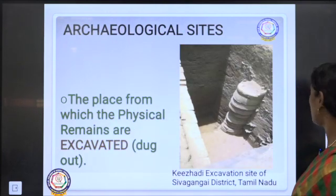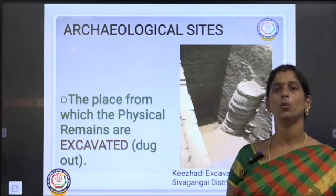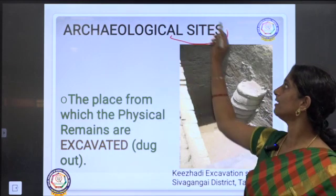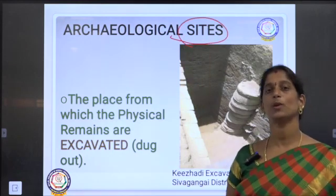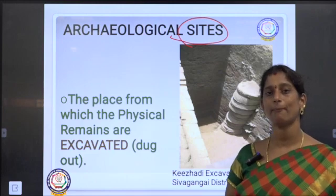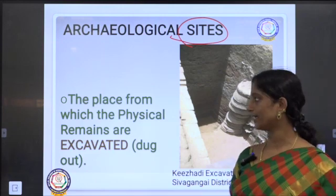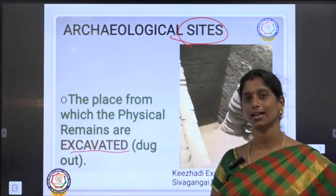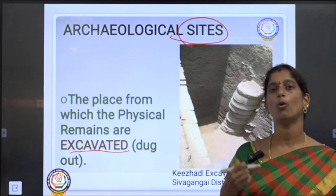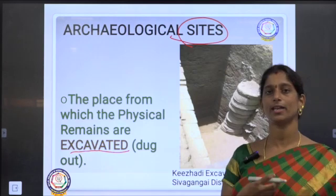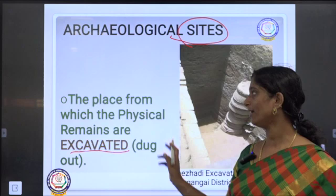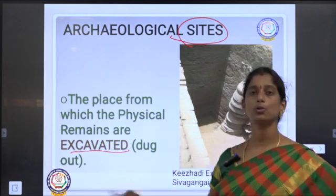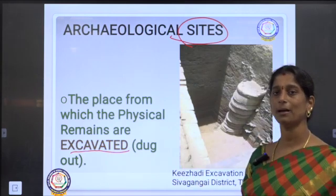We have seen what is archaeology. Now, where do they do these archaeological works? They have archaeological sites. The place where the research of archaeology happens is called an archaeological site. The physical remains are excavated — excavation is nothing but digging out the physical remains of the past.